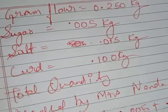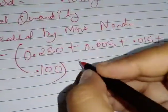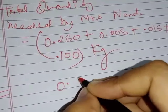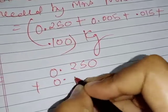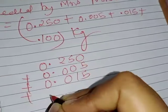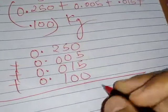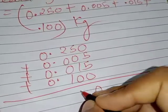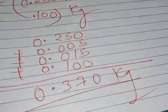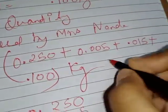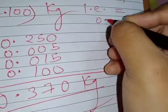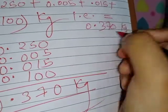How to find the total? 0.250 plus 0.005 plus 0.015 plus 0.100. So all these amounts we will add. How to add? You see: 0.250 plus 0.005 plus 0.015 plus 0.100. Zero plus five is five, five and one is six, and zero. Two plus one is three. So 0.370 kg amount she needed, that is equal to 0.370 kg.